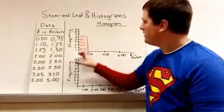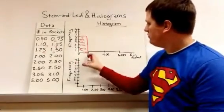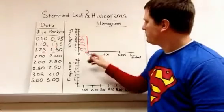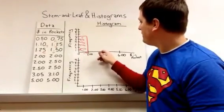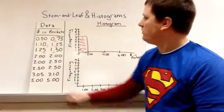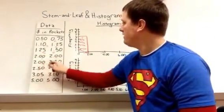These are called bins here. The bins are based off the intervals. Our next interval is two dollars to four dollars. So we're looking at anything from two to three ninety-nine. So here we have one, two, three, four,